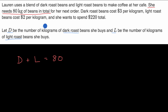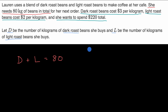Next, they say dark roast beans cost $3 per kilogram, light roast beans cost $2 per kilogram, and she wants to spend $220 total. So what I just underlined in this aquamarine color, we can set up another equation with. If you haven't already set up your system of equations, see if you can now set up the second equation. Pause the video.